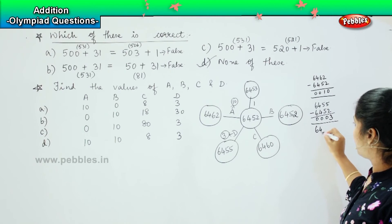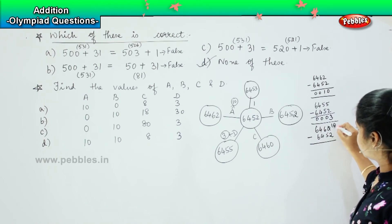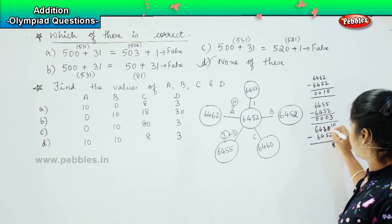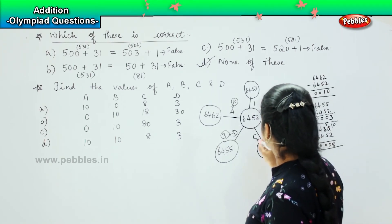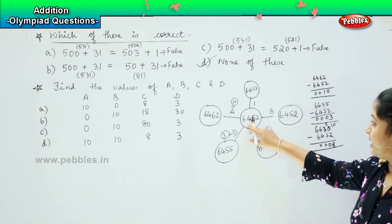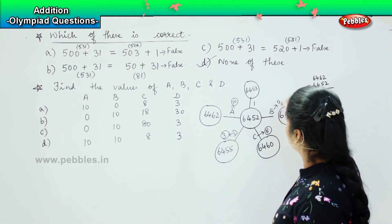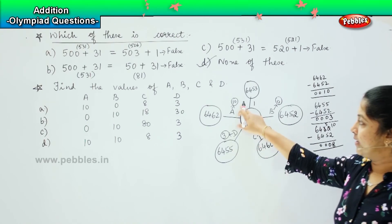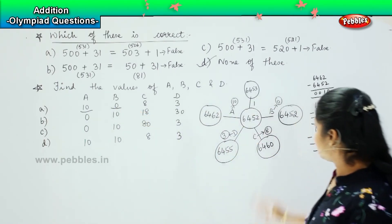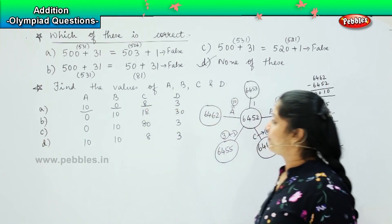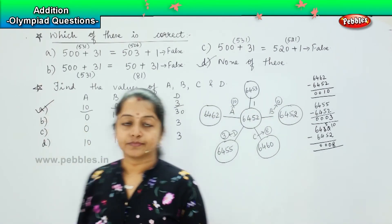Coming to the next one: 6460 minus 6452 — 10 minus 2 is 8, then 5 minus 5 is 0, 0, 0. So the value of C is 8. And here 6452 minus 6452 means the number is 0, so the value of B is 0. So now the value of A is 10, B is 0, C is 8, and D is 3. That is option A is the right answer. Clear? Shall we move ahead?